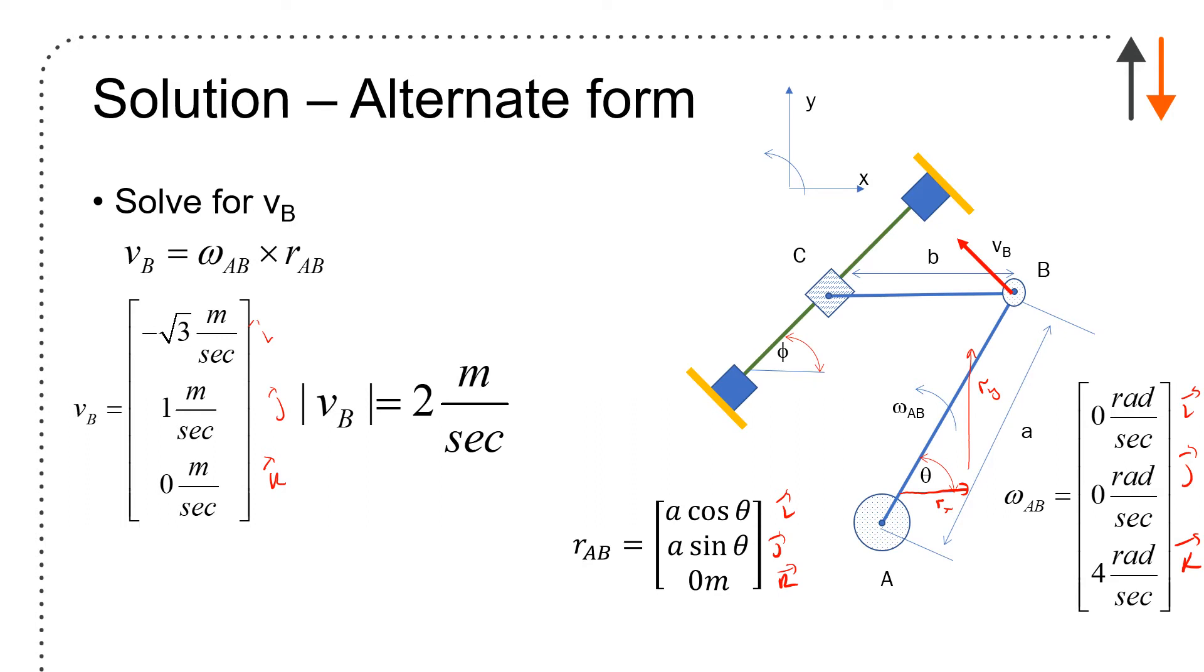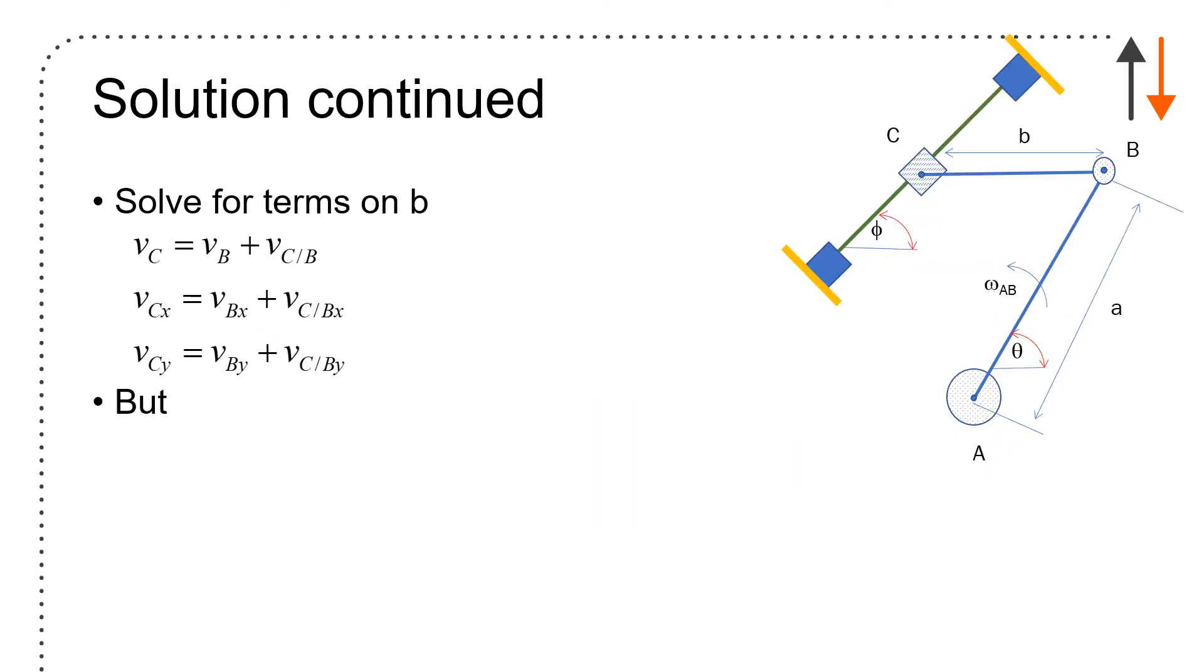You have a magnitude VB of 2 meters per second. You can solve for the remaining terms. VC equals VB plus VC relative to B. VCX is VBX plus VCB relative to X. VCY is VBY plus VCB relative to Y.